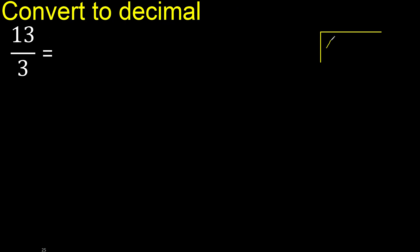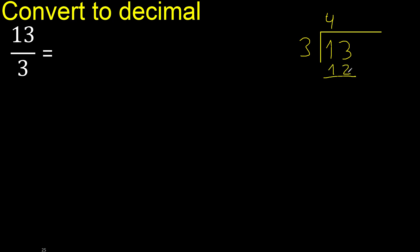13 divided by 3. 13 is not less than 3, so we proceed with 13. We need 3 multiplied by which number is nearest to 13 but not greater. 3 multiplied by 5 is 15 — that is greater. 3 multiplied by 4 is 12 — not greater. 13 minus 12 is 1. That is not a whole number, therefore we must complete with a decimal.